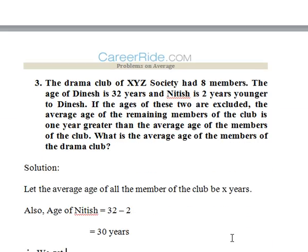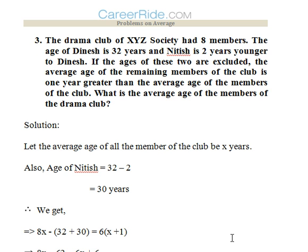Third question: The drama club of XYZ society has 8 members. The age of Dinesh is 32 years and Nitish is 2 years younger to Dinesh. If the ages of these two are excluded, the average age of the remaining members of the club is 1 year greater than the average age of members of the club. What is the average age of the members of the drama club?